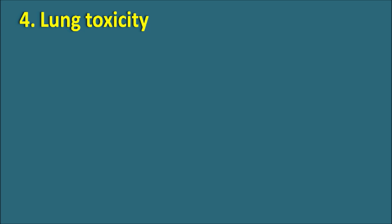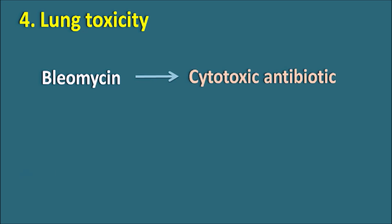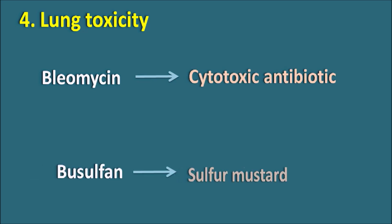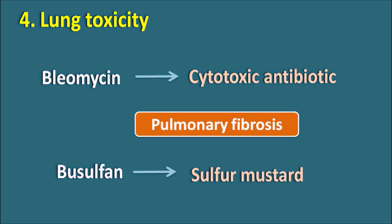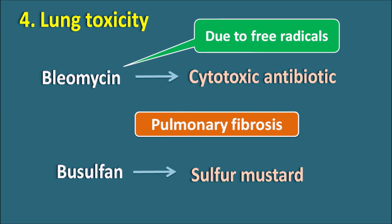Fourth is lung toxicity. Two drugs — bleomycin, a cytotoxic antibiotic, and busulfan, a sulfur mustard belonging to alkylating agents — both starting with the letter B — can produce pulmonary fibrosis. While many anti-cancer agents can produce pulmonary fibrosis at very high doses and with long-term treatment, these two drugs carry a more pronounced risk. When these drugs are given, lung functionality should be thoroughly checked. Bleomycin can also generate free radicals responsible for lung toxicity and pulmonary fibrosis.